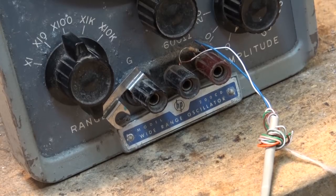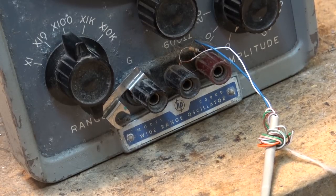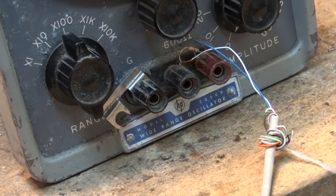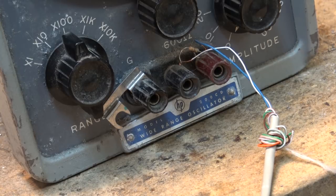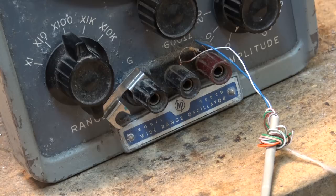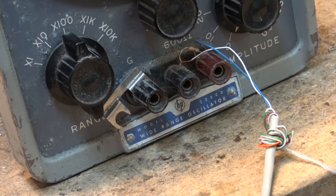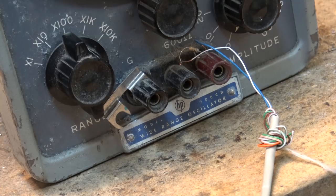So in this video we're going to calibrate my model 200 CD wide range oscillator, my HP wide range oscillator. This thing goes back to around 1962-63 vintage. It's going to be at the same vintage as my old scope, so let's calibrate this unit.